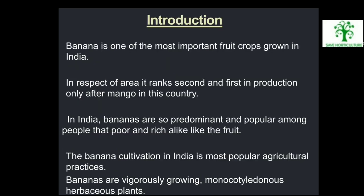Introduction: Banana is one of the most important fruit crops grown in India. In respect of area, it ranks second and first in production only after mango in this country. In India, bananas are predominant and popular among people — both poor and rich like the fruit. The banana cultivation in India is a most popular agricultural practice. Bananas are vigorously growing, monocotyledons, herbaceous plants.